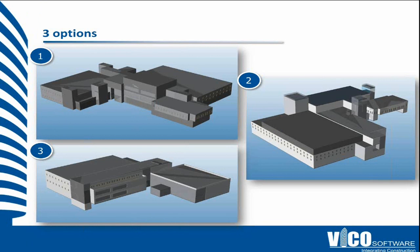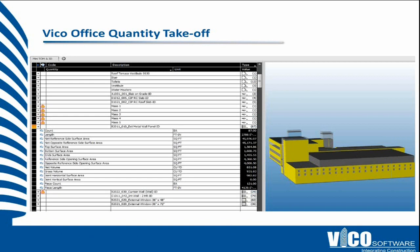These were the three different model options created over the last few weeks - or days - from the teams working on this BIM storm. We literally published all three of these models into VicoOffice, and as soon as you publish and activate them in VicoOffice, you get in the next step a full quantity takeoff. All of the elements created in that 3D model generate a list of what we call takeoff items - for example, the exterior metal panel wall - and a whole series of quantities that can then be used in the cost planning and scheduling process.